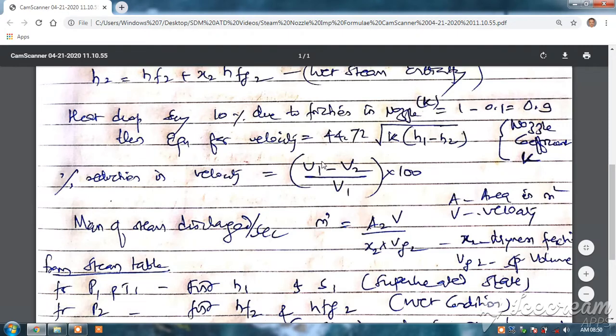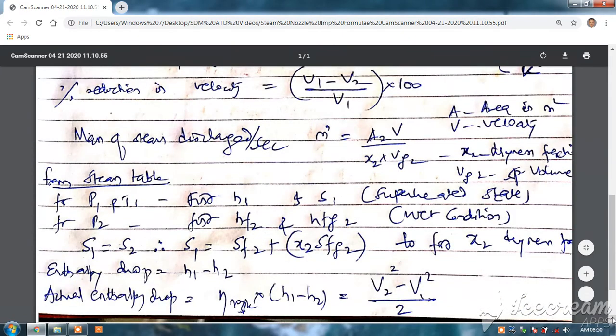So reduction, percentage reduction is V1 minus V2 divided by V1 - this is percent reduction in the velocity. Again, the mass of steam discharge, this m dot is equal to a2 into V, this velocity divided by x2 into V.